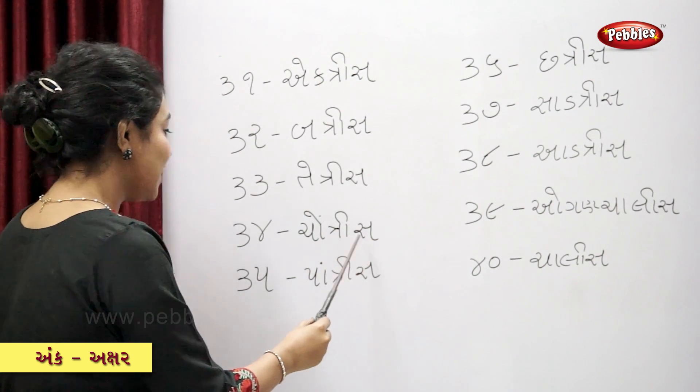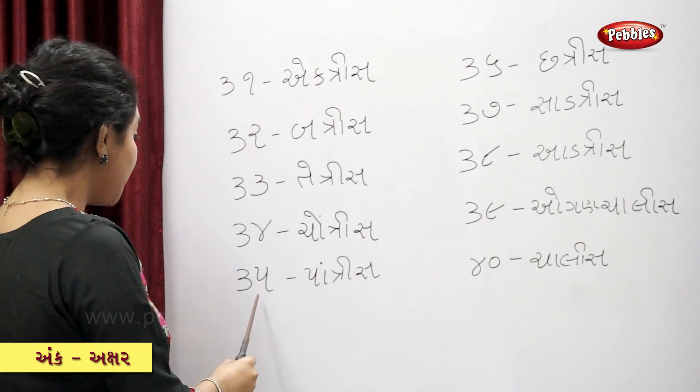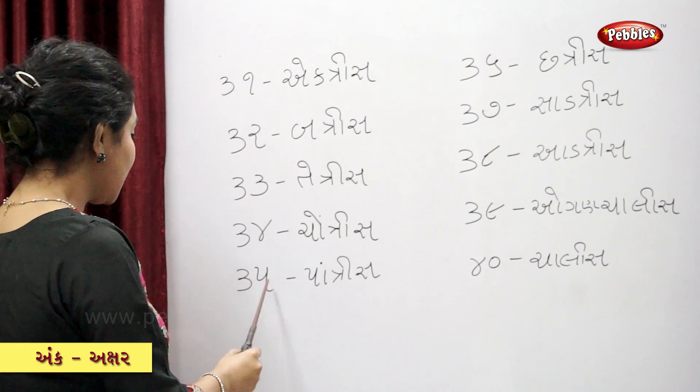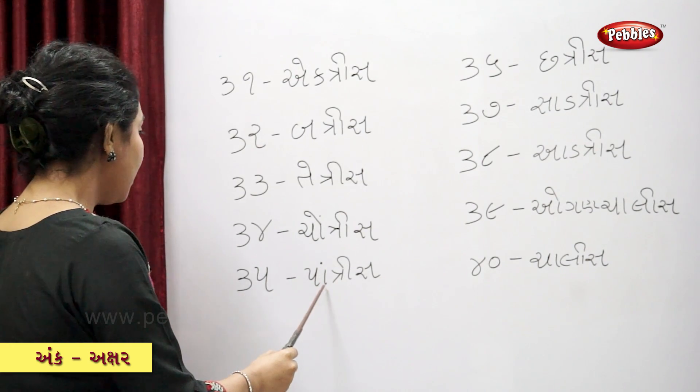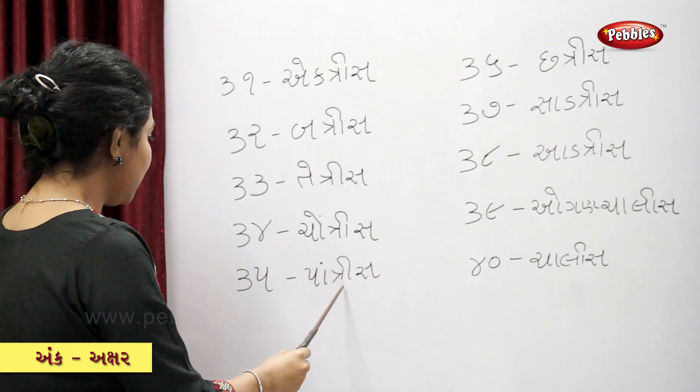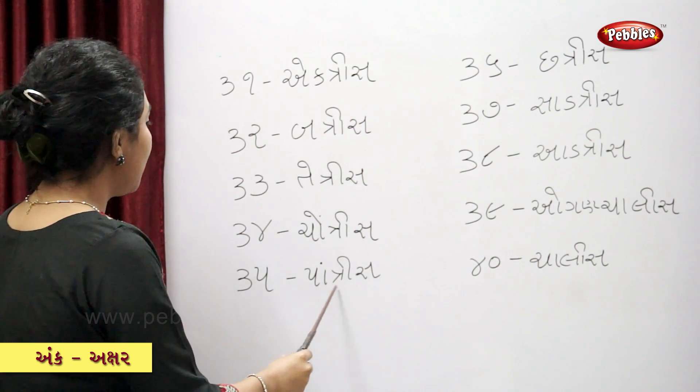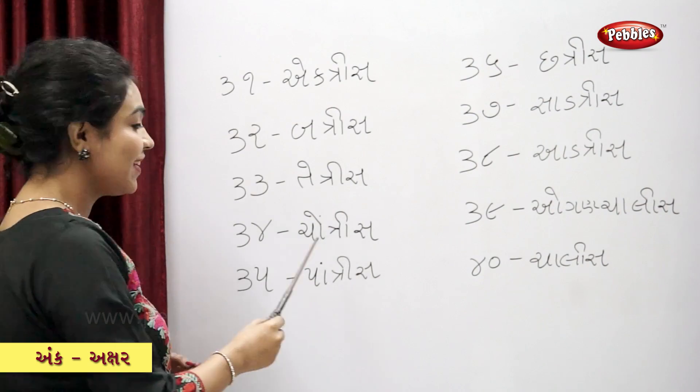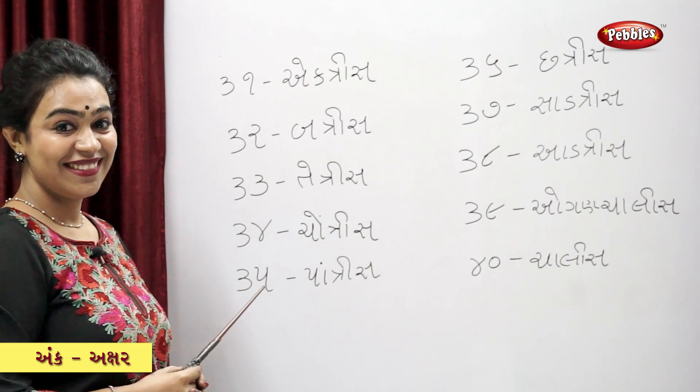Chotris — thirty-five. Patris — thirty-six. Pan-tris — thirty-seven.